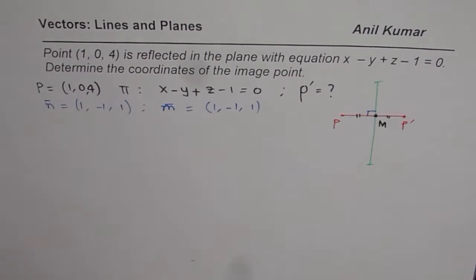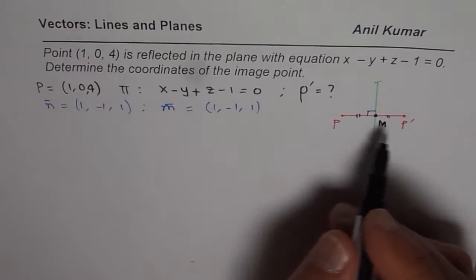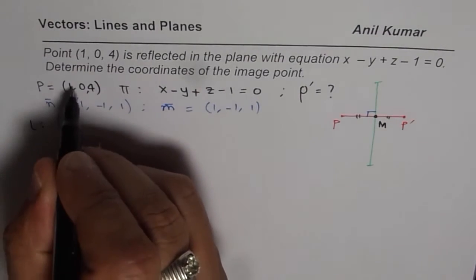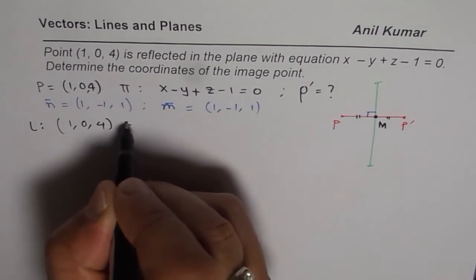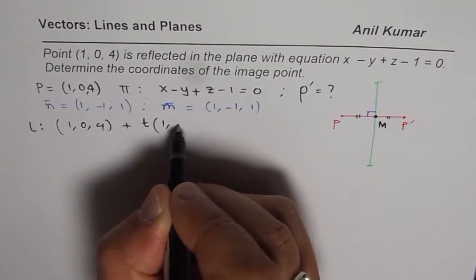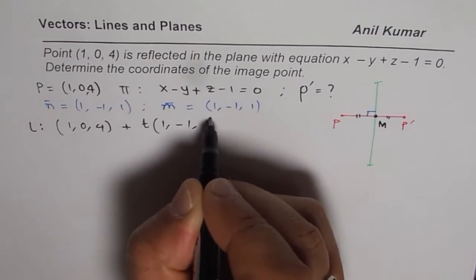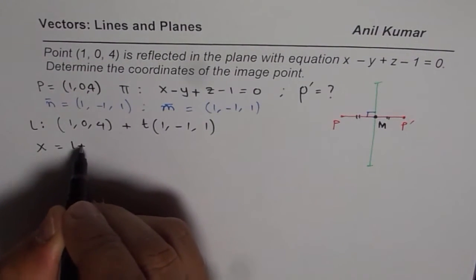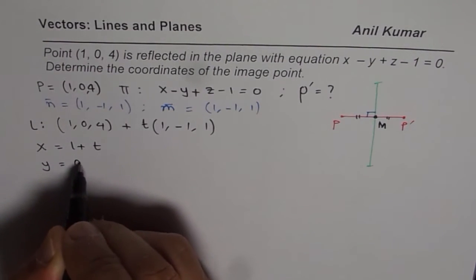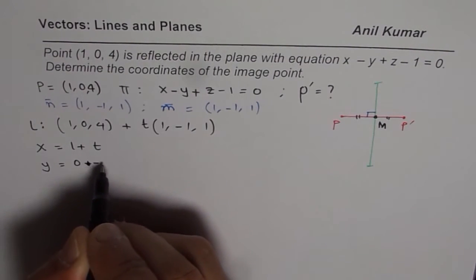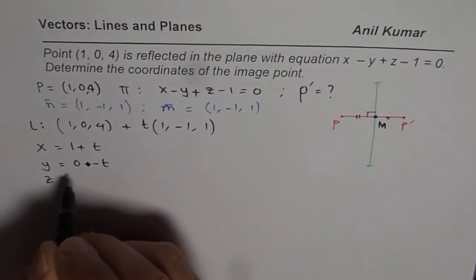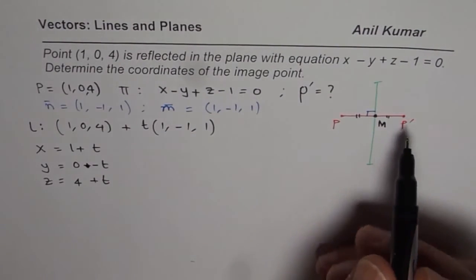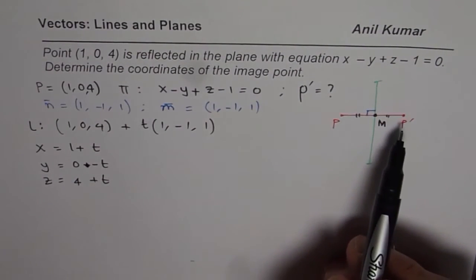Knowing the point and direction vector, we can always find the equation of the line. The equation of our line L is the point (1, 0, 4) plus parameter t times the direction (1, −1, 1). So any point on this line can be written as: x = 1 + t, y = 0 − t, and z = 4 + t. These are the parametric coordinates of any point on the line which has points P and P-dash on it.